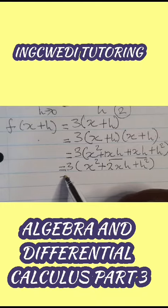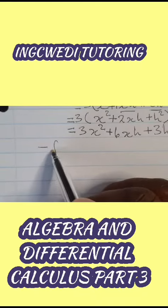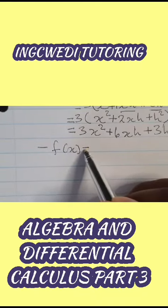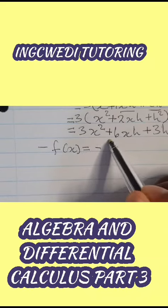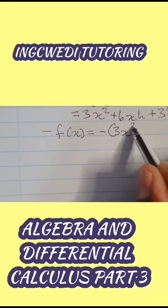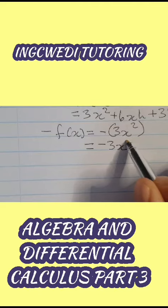Now we multiply by 3. Then minus f of x. We know that we'll have 3x squared plus 6xh plus 3h squared minus 3x squared.